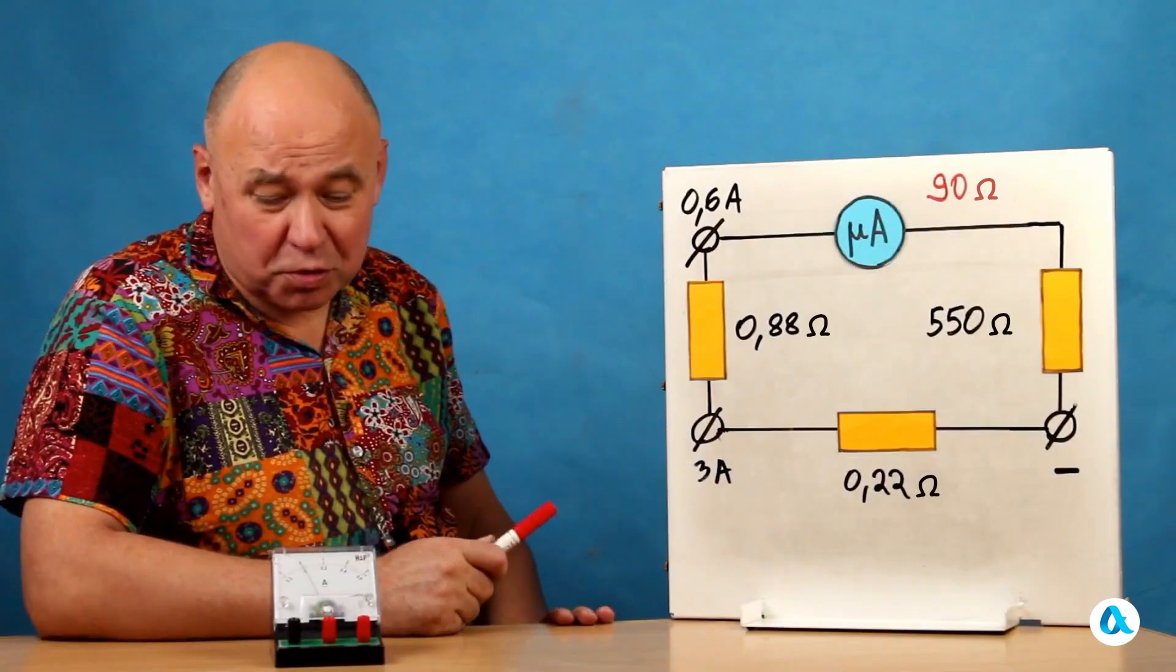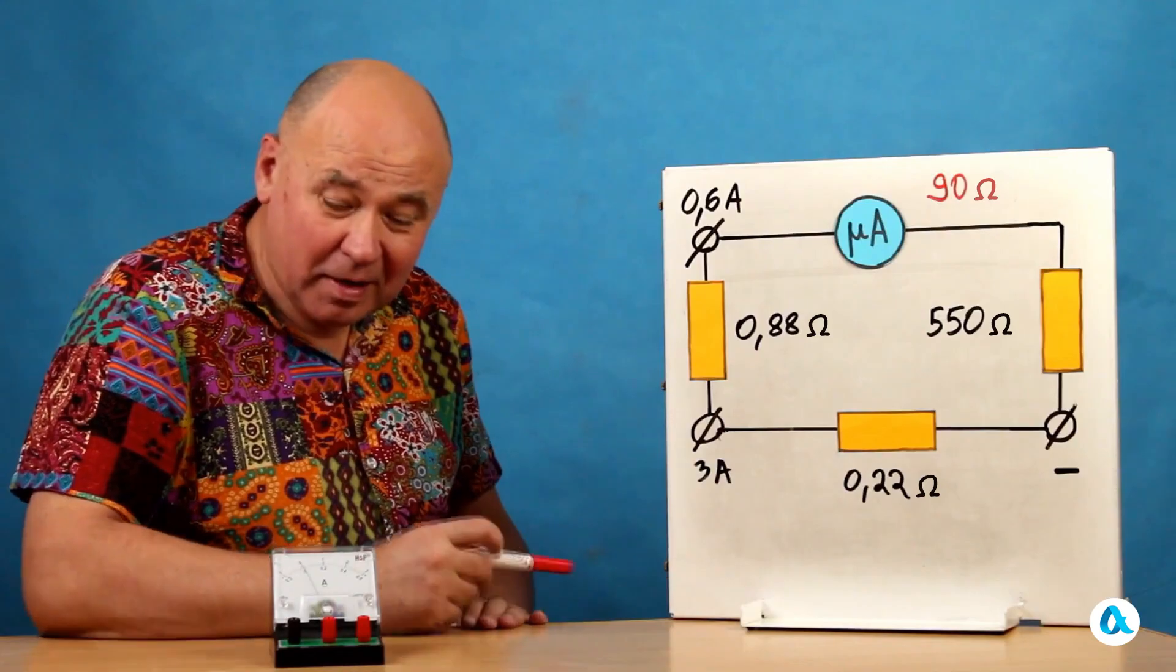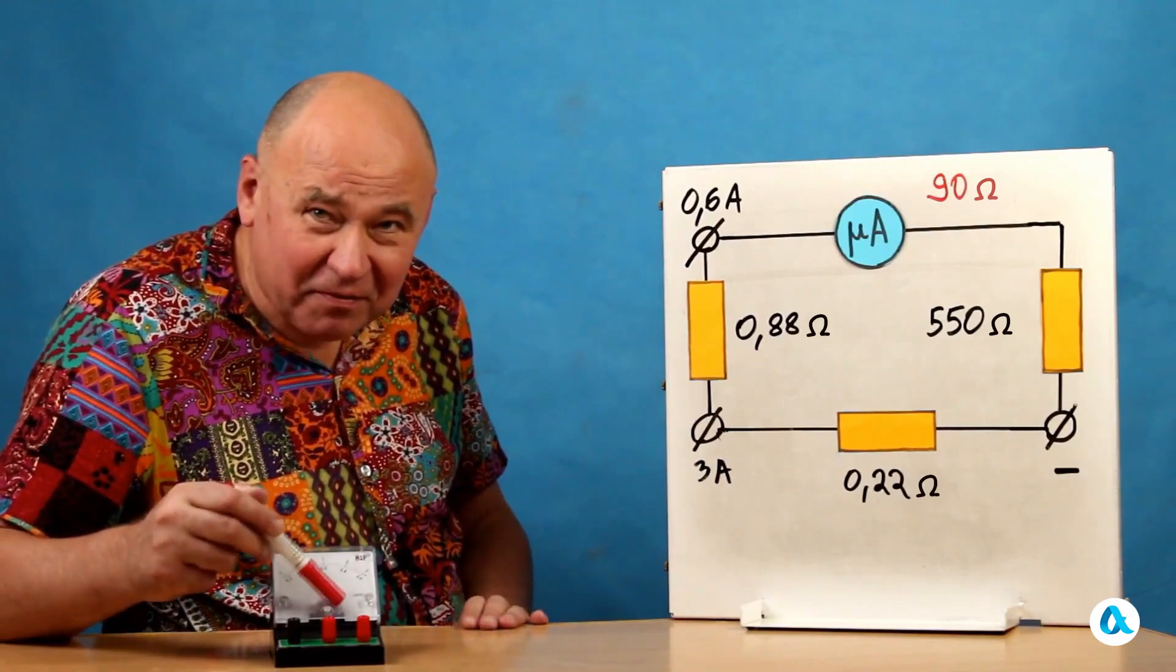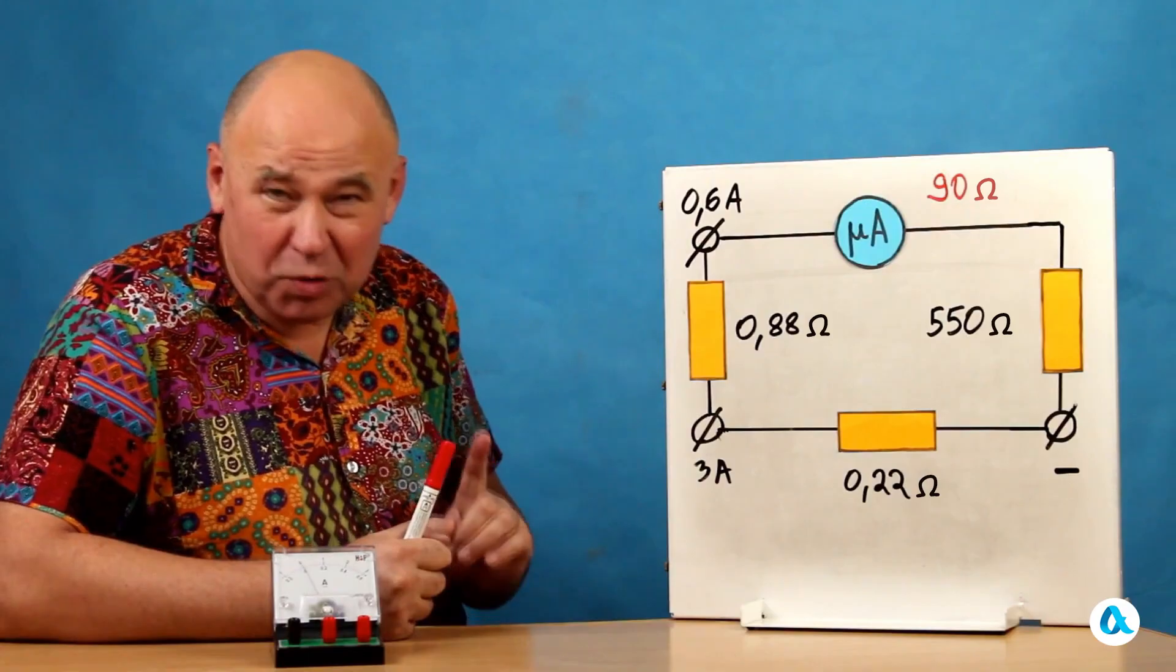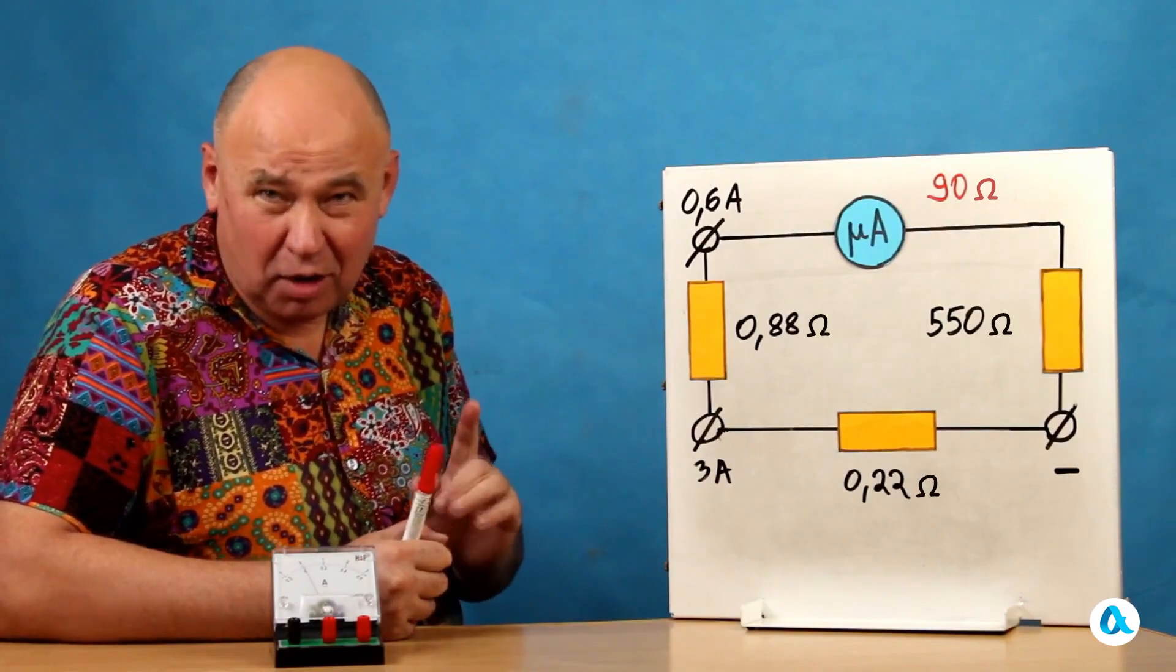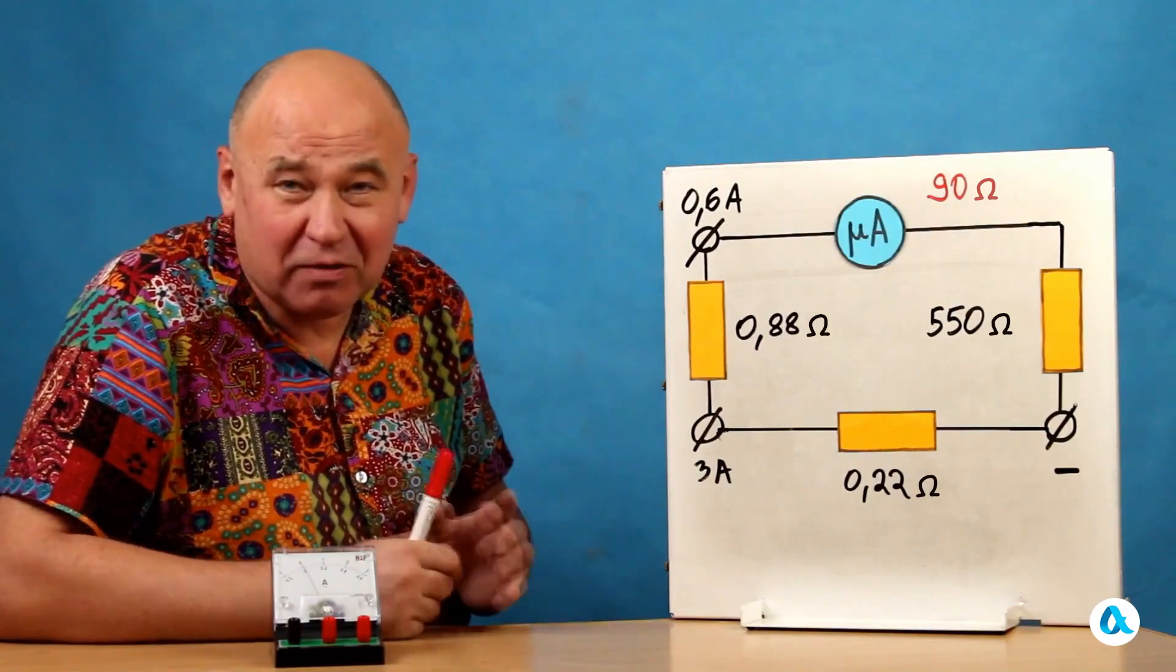And I'll start with the construction of the ammeter. The device installed inside is actually a micro-ammeter and it can measure currents up to a thousand micro-amperes. That is, one milliampere.